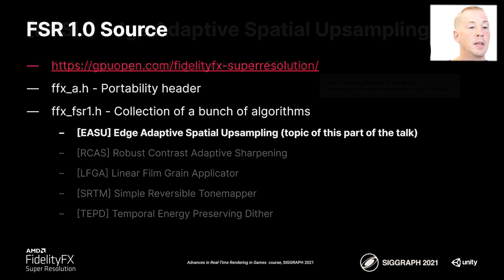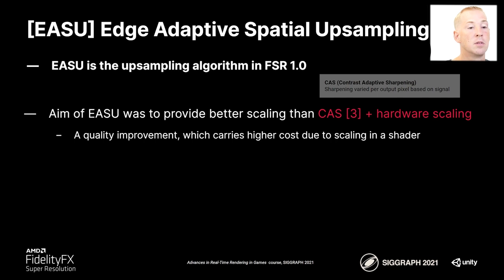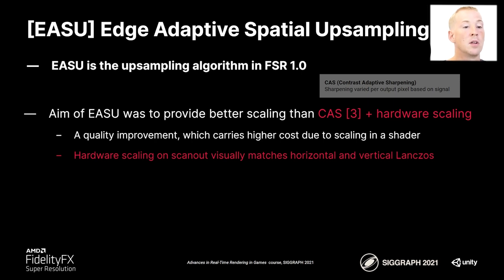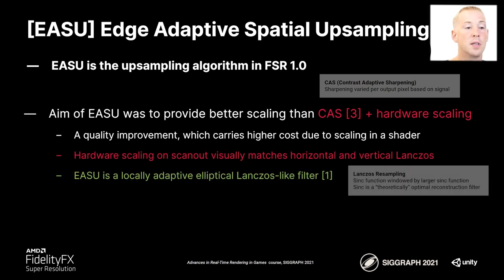EASU had an aim: to provide better scaling than the previous solution of using CAS — Contrast Adaptive Sharpening — followed by the hardware scaling built into the graphics card. The hardware scaling visually looks like horizontal and vertical Lanczos, which is a resampling algorithm that is a sinc function, a theoretically optimal reconstruction filter windowed by another sinc function, which is truncated. In order to do better than the hardware scaling, we had to do something more adaptive. EASU focuses on something locally adaptive to the properties around the pixel — directionally and length and window adaptive — and is best described as a locally adaptive elliptical Lanczos-like filter.